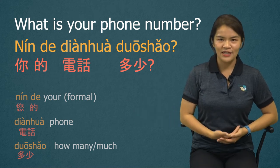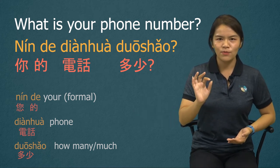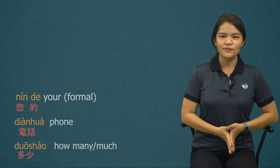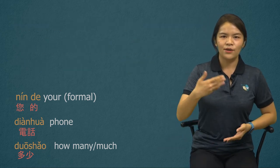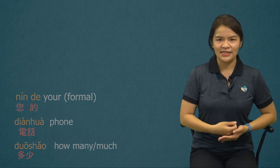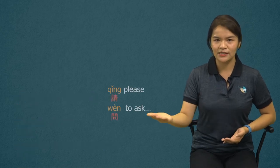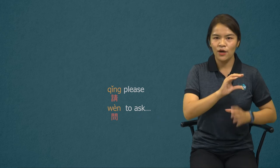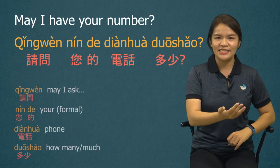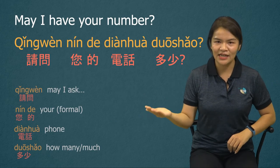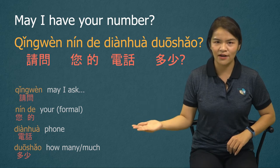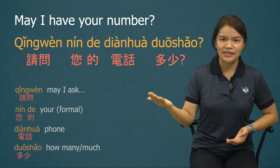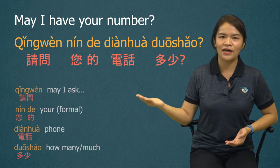We can be even more polite — 'May I have your number?' The phrase 'may I ask' is 请问, 请问. So the whole sentence is: 请问，您的电话多少? 请问，您的电话多少?